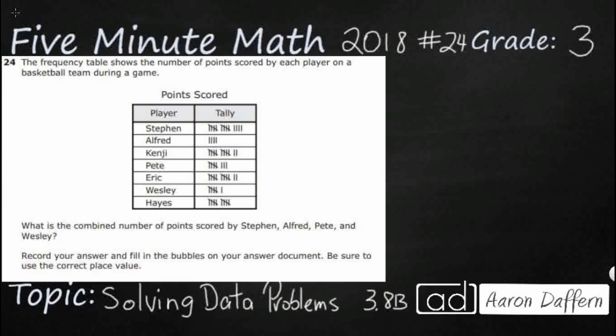So we have a frequency table here, and it is showing the number of points scored by each player on a basketball team. The frequency table gives us raw numbers as tally marks, so we are going to extend it and add to the frequency table. All we want to do is put some digits there.